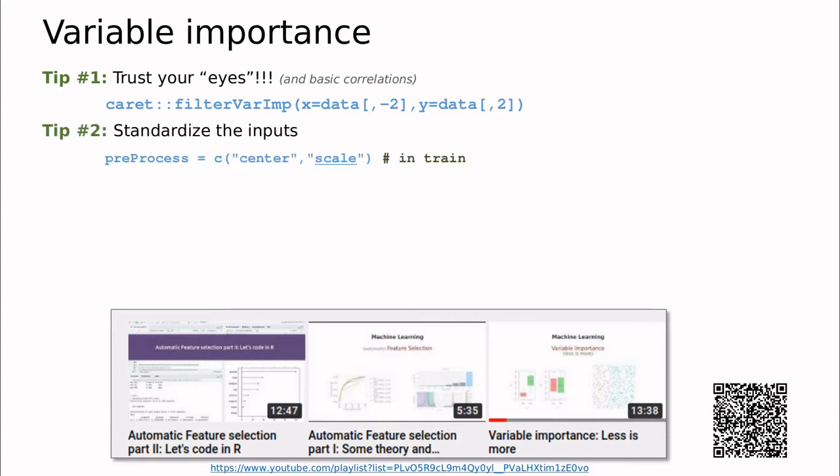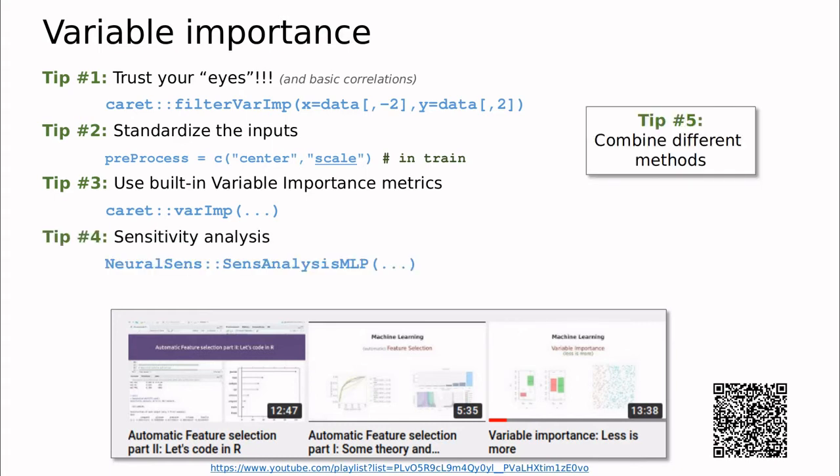The second tip is to standardize the inputs. So when you have inputs that have a lot of range of variation, especially related to the standard deviation of the data, you can have some misleading results. Tip number three, use built-in variable important metrics. And one interesting thing with the methods that I'm going to show you in this series of videos is related to the fact that linear regression is actually one of the best methods to decide what variables are more important.